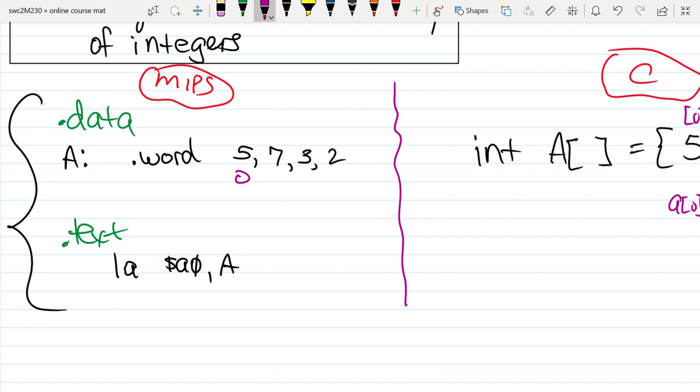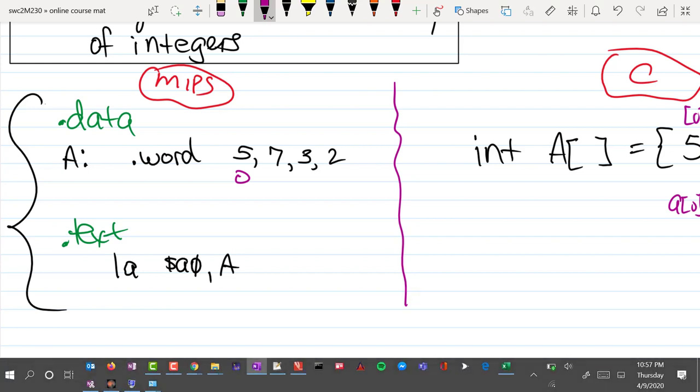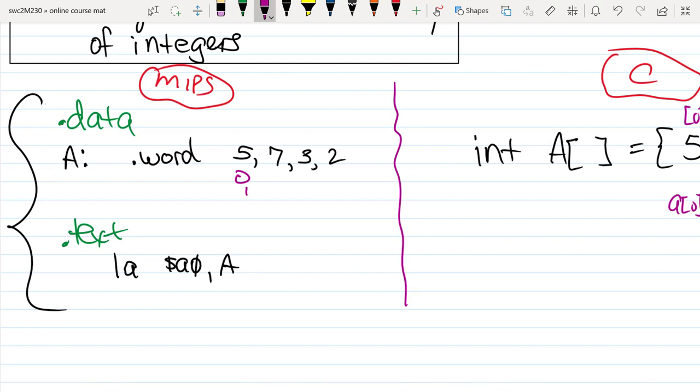So these you can think about memory as being kind of an array of bytes. And so since we've said 32-bits, that's actually 4 bytes. So this 5 will occupy bytes 0, 1, 2, and 3—that's 4 bytes. The value 7 will occupy 4 bytes but it'll start at 4, 5, 6, 7. The next one starts at 8, 9, 10, 11. The next one starts at 12, 13, 14, and 15.